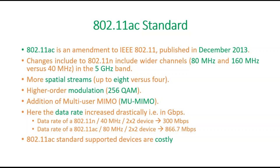Data rates increased drastically — now in Gbps, where earlier it was in Mbps. For example, in 802.11n with 40 MHz and a 2x2 device, the speed was 300 Mbps. Now in 802.11ac with 80 MHz and a 2x2 device, the speed becomes 866.7 Mbps — almost more than double. However, 802.11ac standard supported devices are very costly.